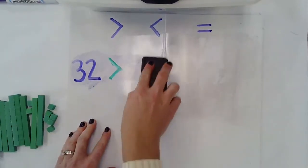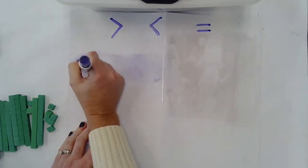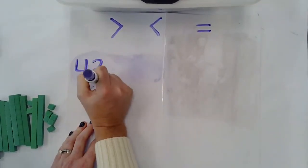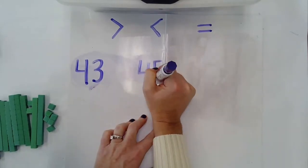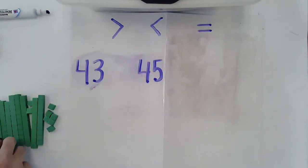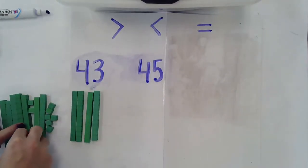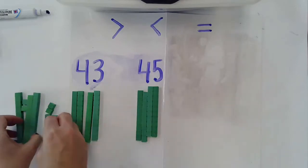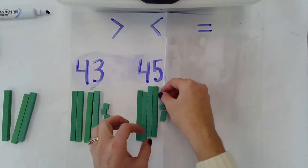So let's try with another set of numbers. So this time we're going to look at 43 and 45. Again, I'm going to create these numbers with my place value blocks. Got 3 ones here and then 5 ones over here.